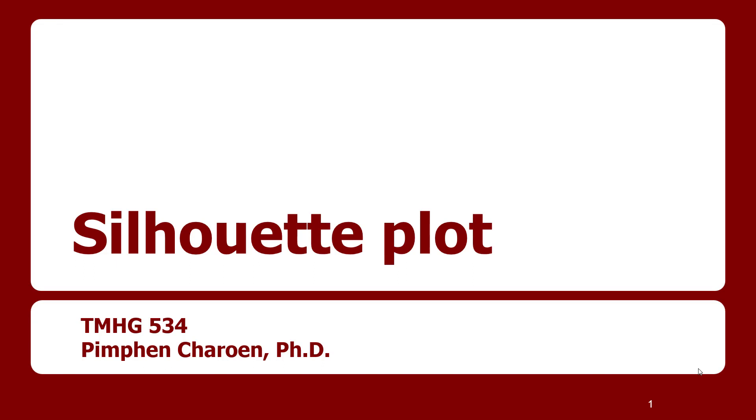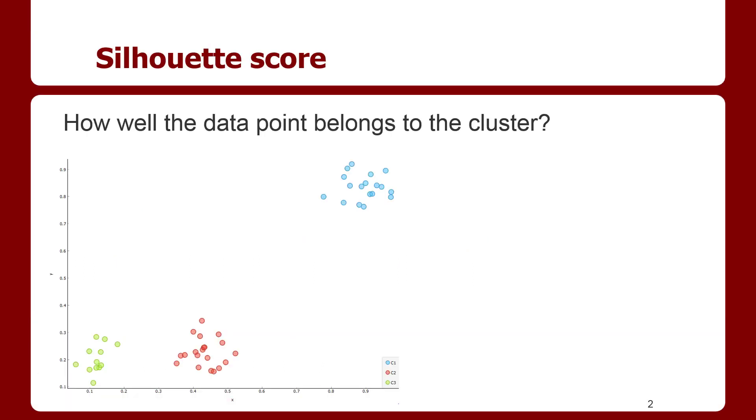I will show you how to visualize how well each object has been classified into clusters using silhouette plot. Here I have three clusters. We are going to calculate the silhouette score, which basically measures how similar an object to its own cluster compared to other clusters. Let's look at the green cluster. Let's say we want to look at how well a point P belongs to the green cluster. Let's say this is point P.